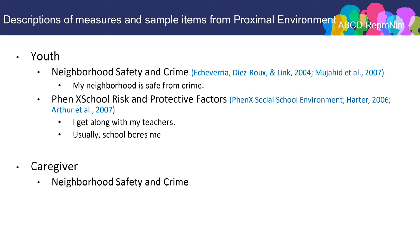Moving to the proximal environment domain — for youth, we had a brief questionnaire of neighborhood crime and safety from Phoenix, with a simple question: 'My neighborhood is safe from crime.' And the Phoenix School Risk and Protective Factors, a measure drawing from multiple instruments asking about the school environment — things like 'I get along with my teacher' and 'usually school bores me.' For caregivers, we also ask about neighborhood safety and crime. There's also a separate ABCD workgroup focused on geolocation and data-driven environmental data like number of liquor stores and poverty by zip code, which complements our self-report measures.